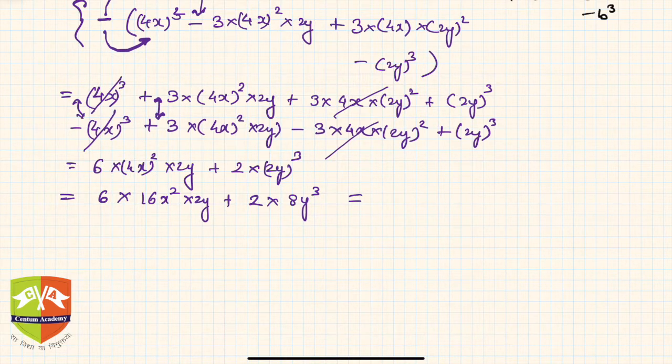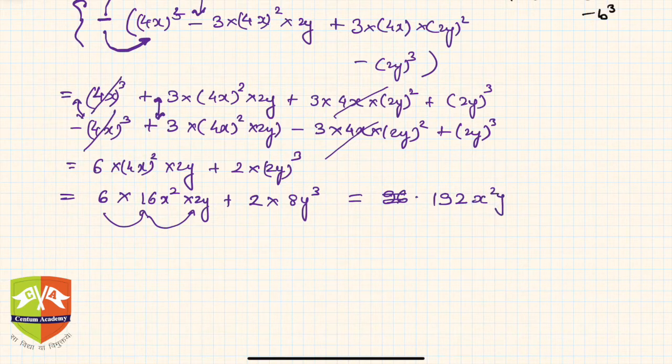The answer is 6 into 16 into 2, so hence it will be 192. So 6 into 16 into 2 is 192x²y, and here it is 16y³. So if you see the final simplification would be 192x²y plus 16y³. This is the simplification of these two binomial cubes.